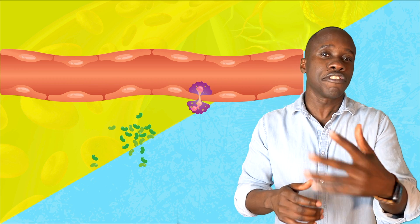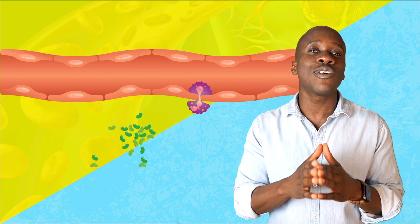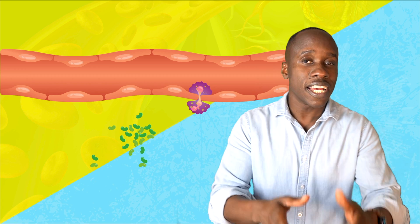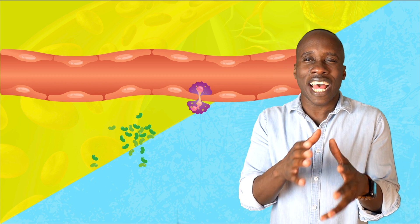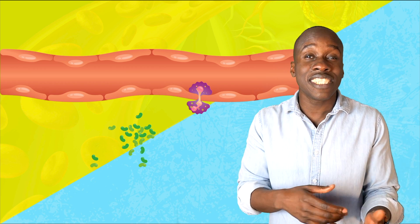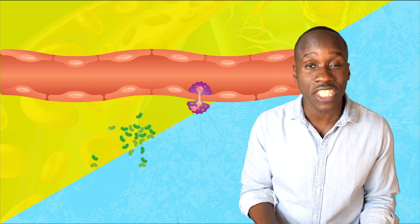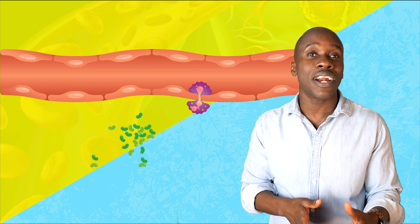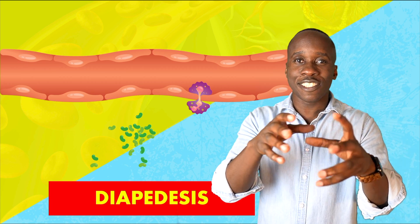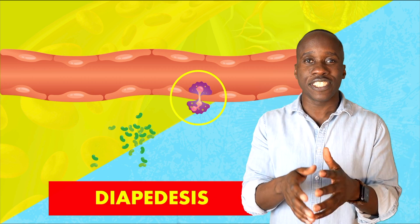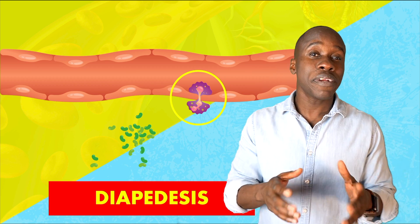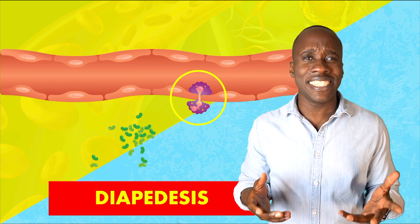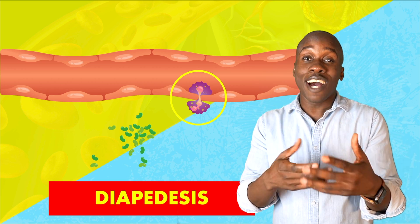Now we have to talk about a very unique characteristic of white blood cells. Unlike red blood cells, leukocytes don't spend all their time in blood vessels. They travel along in those blood vessels, kind of scouting things out, and use them to get to a specific destination. But then they're able to leave the blood vessels and enter the tissues directly via a process called diapedesis - they literally squeeze in between the cells of blood vessels to get to where they need to be. It's a pretty cool process, and a pretty cool word. If you say diapedesis in a conversation, you sound smart.